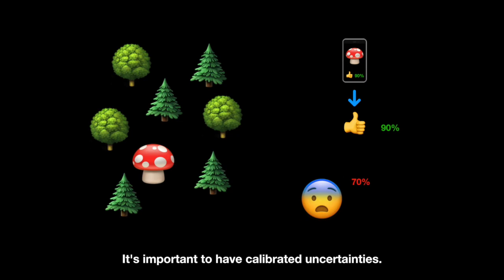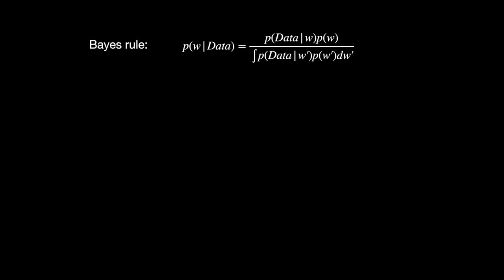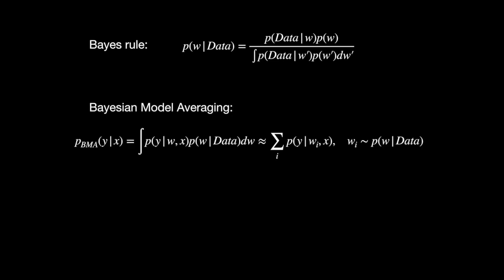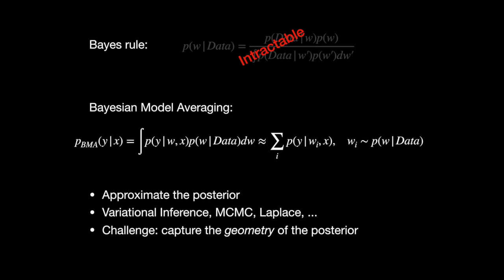Deep learning models trained with maximum likelihood tend to be overconfident and miscalibrated because they ignore uncertainty over their parameters. In Bayesian machine learning, we account for this uncertainty by forming a posterior distribution over the weights according to Bayes' rule. Once this distribution is formed, we can make predictions using Bayesian model averaging, integrating out the weights according to the posterior. For neural networks, the posterior is intractable and must be approximated, but existing approximate inference methods tend to be highly sensitive to hyperparameter choices and hard to scale to modern datasets and architectures.